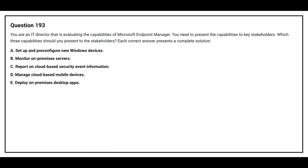Option A: set up and pre-configure new Windows devices. Option B: monitor on-premises servers. Option C: report on cloud-based security event information. Option D: manage cloud-based mobile devices. Option E: deploy on-premises desktop apps.